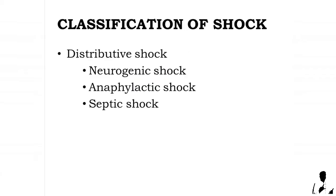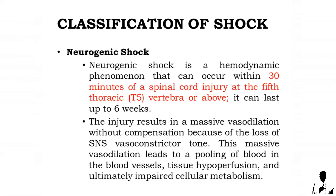Under distributive shock, neurogenic shock is a hemodynamic phenomenon that can occur within 30 minutes of a spinal cord injury at the fifth thoracic vertebra (T5) or above, and can last up to six weeks. The injury results in massive vasodilation without compensation due to loss of sympathetic nervous system vasoconstrictor tone.